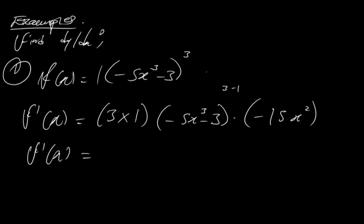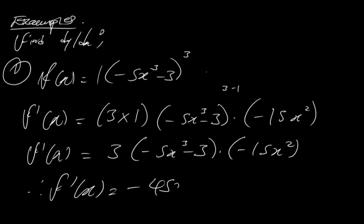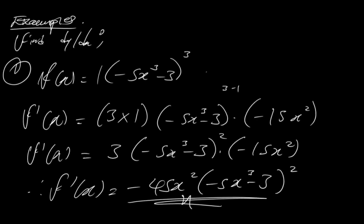So f prime of x is equal to 3 times 1, that's 3, times (minus 5x cubed minus 3) to the power of 2, times minus 15x squared. If you simplify furthermore, you will end up having f prime of x being equivalent to minus 45x squared times (minus 5x cubed minus 3) to the new power of 2. And that's clear.